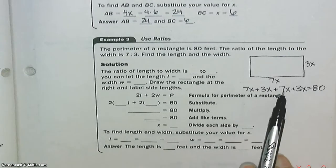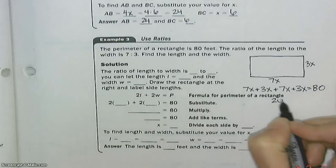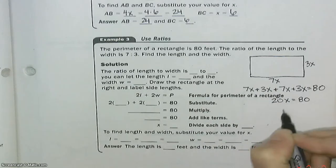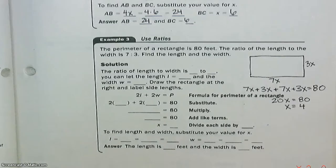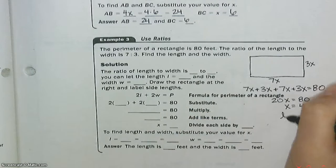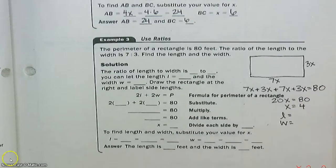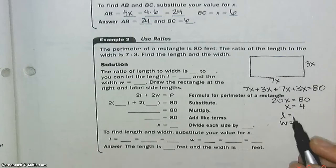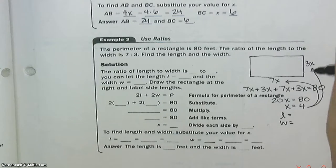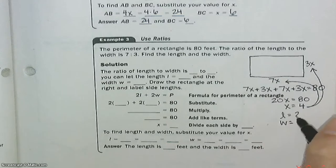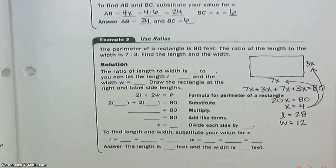So now how many x is this? 7 plus 3 is 10, 17, 20. 20x equals 80. So that means x is equal to 4. Now we need to find the length and the width. The length was 7x and the width was 3x. So 7 times 4 is 28, and 3 times 4 is 12.